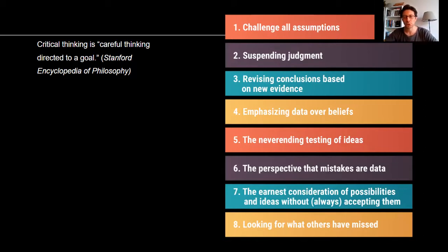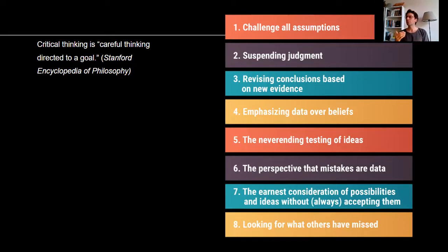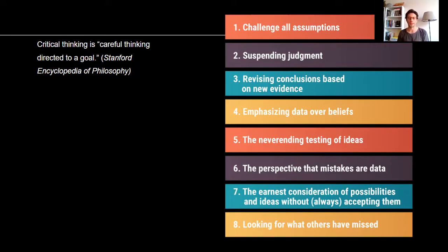The second step asks us to suspend judgment. When you suspend judgment, you should not jump into conclusions right away. You should think about other assumptions you might be making, challenge them, and reconsider your reasoning. The third step tells us to revise conclusions based on new evidence — this is also part of scientific thinking. Whenever there is new evidence, we should reconsider our judgment and reasoning.